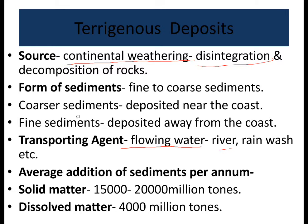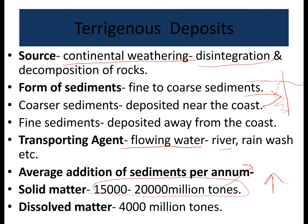Coarse sediments are deposited near the coastal region, while finer sediments — being smaller in size — can be easily transported further into the sea. The average addition of sediments per annum: solid matter deposited is 15 to 20 thousand million tons, whereas dissolved matter (fine sediments) is around 4,000 million tons per annum deposited in the sea.